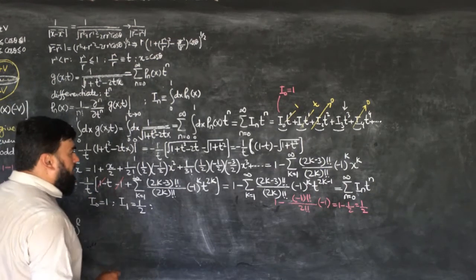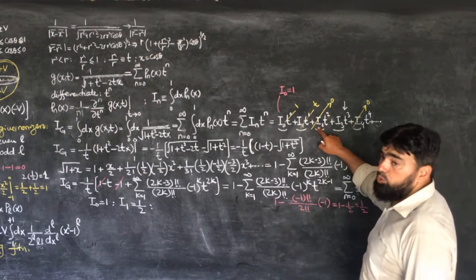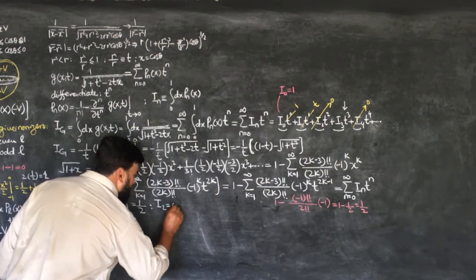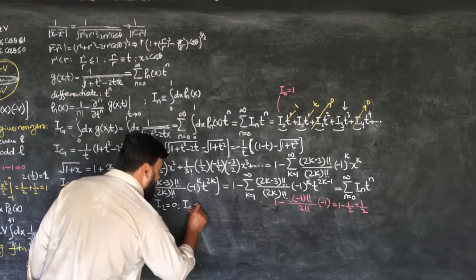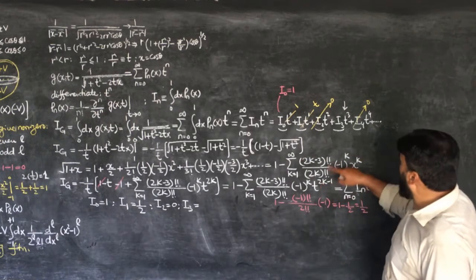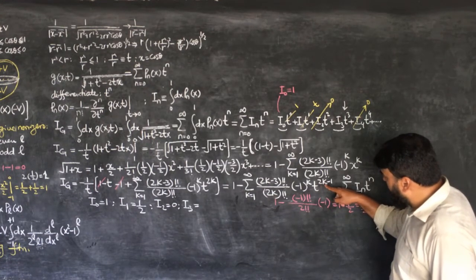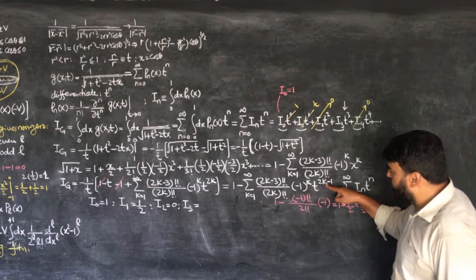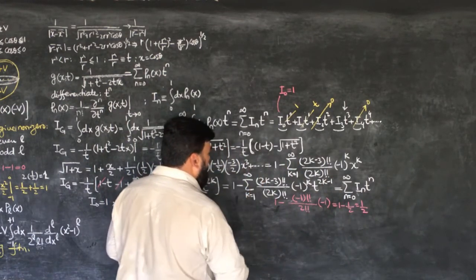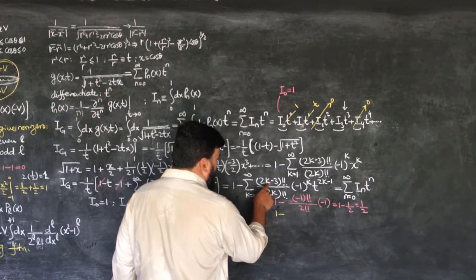I_2 = 0 because we get no coefficient of t^2. For I_3, we look at k=2: the power is 2×2−1 = 3, confirming t^3 gives I_3. Putting k=2: (2×2−3)!! over (2×2)!! times (−1)^2, which is (1)!! over (4)!! times 1. So 1!! = 1 and 4!! = 4×2 = 8, giving I_3 = 1 minus 1/8.